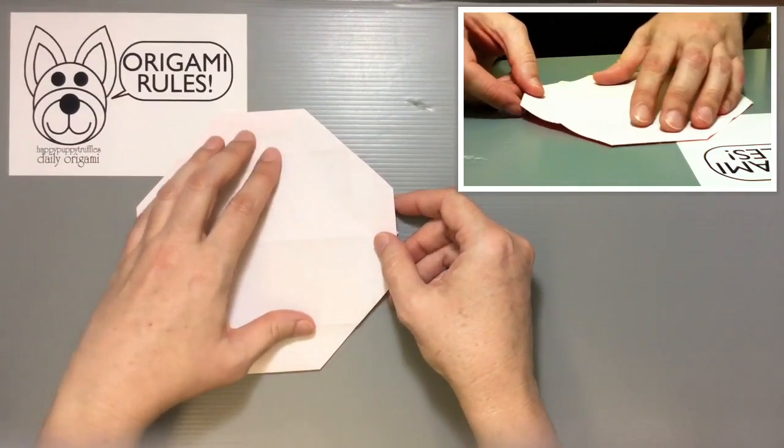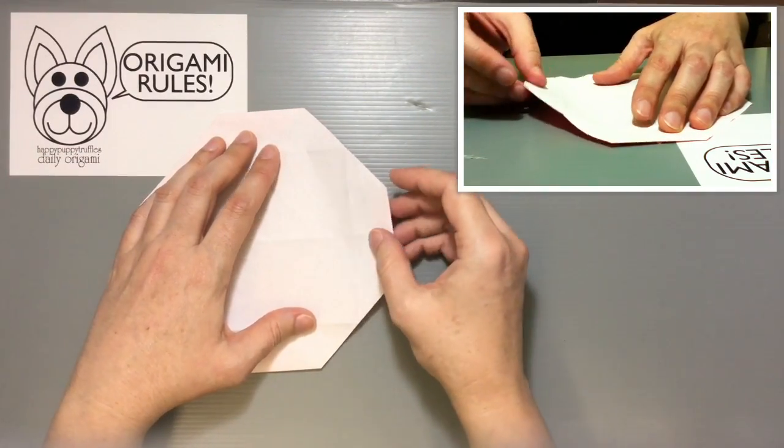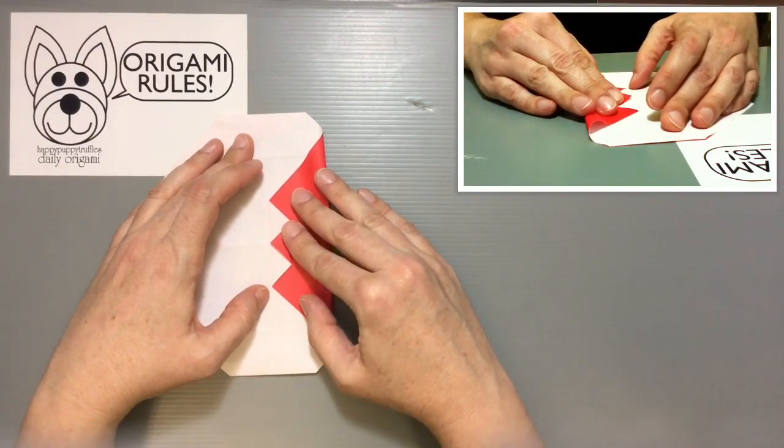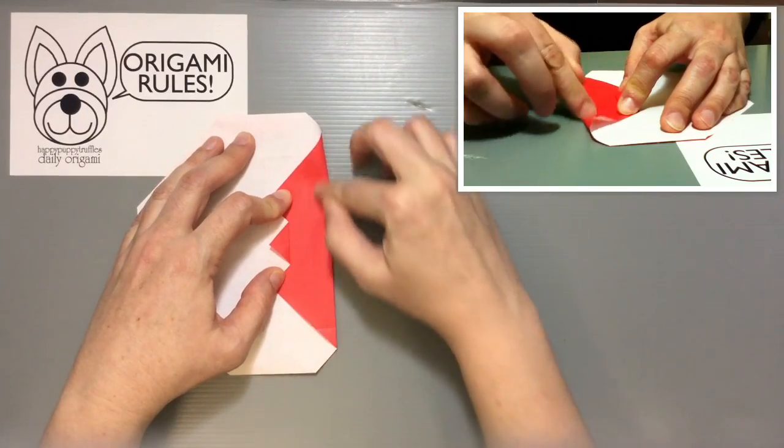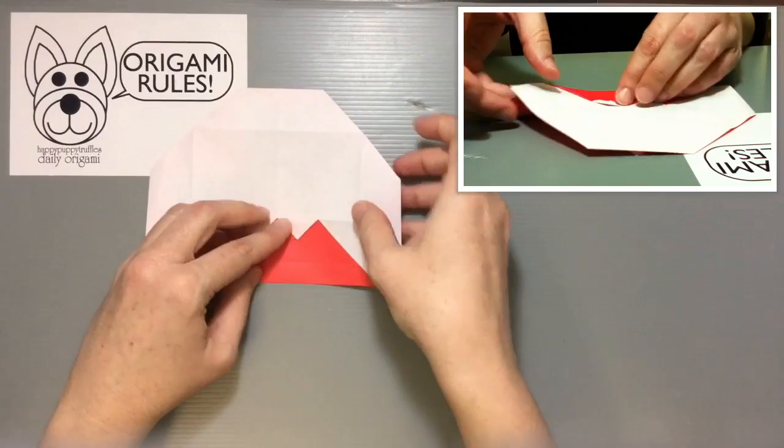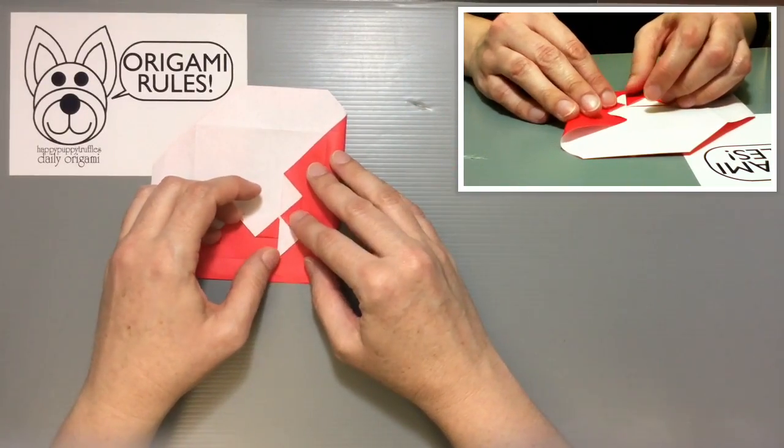If I flip everything over for a second, now I'm going to take the side that you see here and fold the edge that I've just made right towards the middle. Make that as straight as you can, fold it over. I'll do the same thing with the next one here, folding in towards the center.